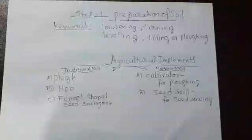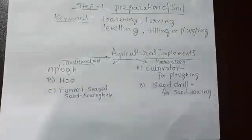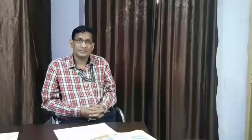Now we come to agricultural implements. What are the different tools used for agricultural practices? We group the implements used in India into two categories: traditional tools and modern tools. Traditional tools include the plough, hoe, and funnel-shaped seed-sowing tools. Modern tools include the cultivator for ploughing and the seed drill for seed sowing.